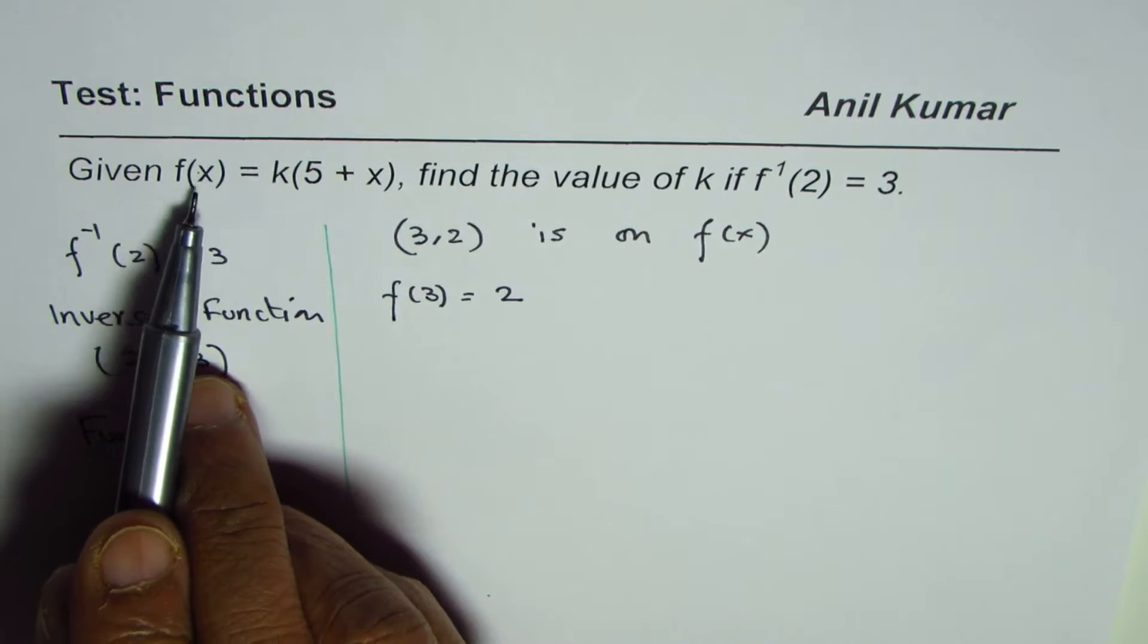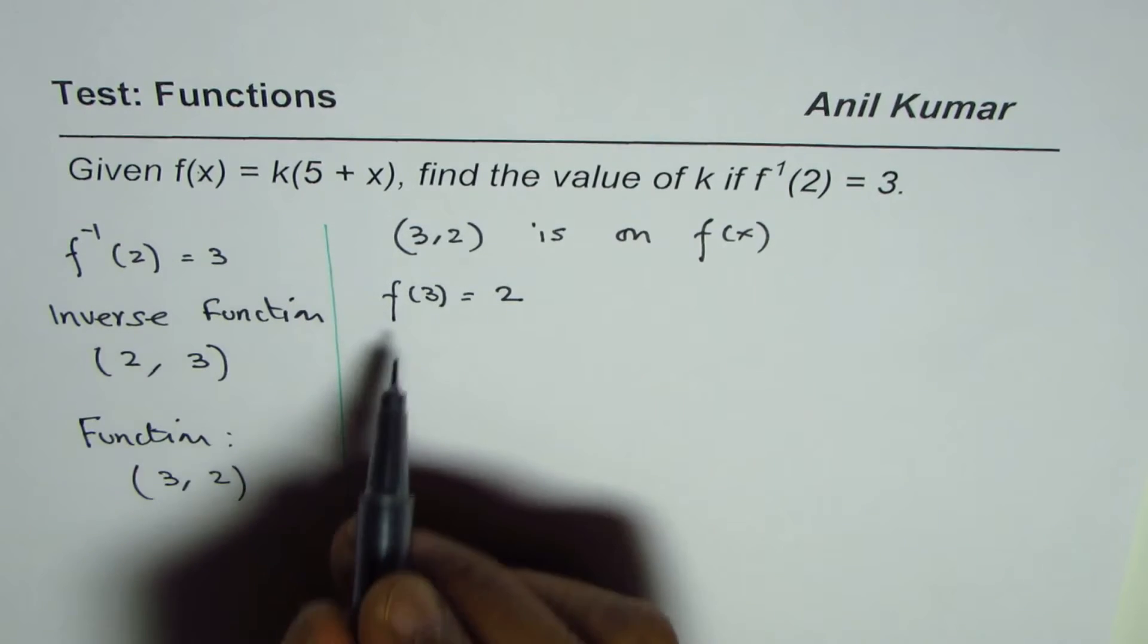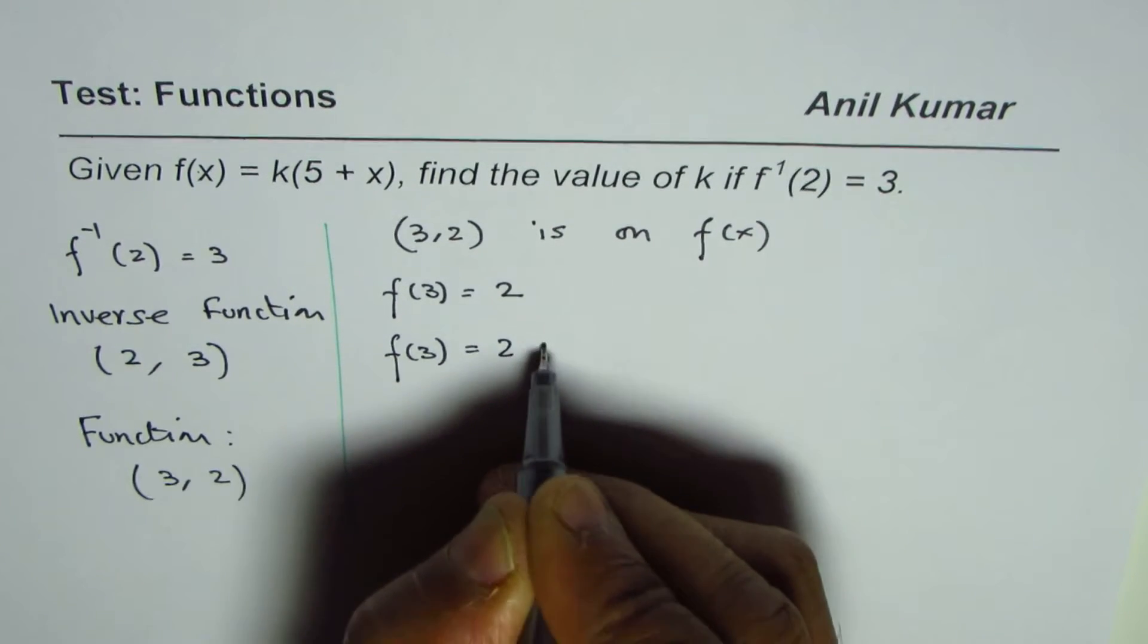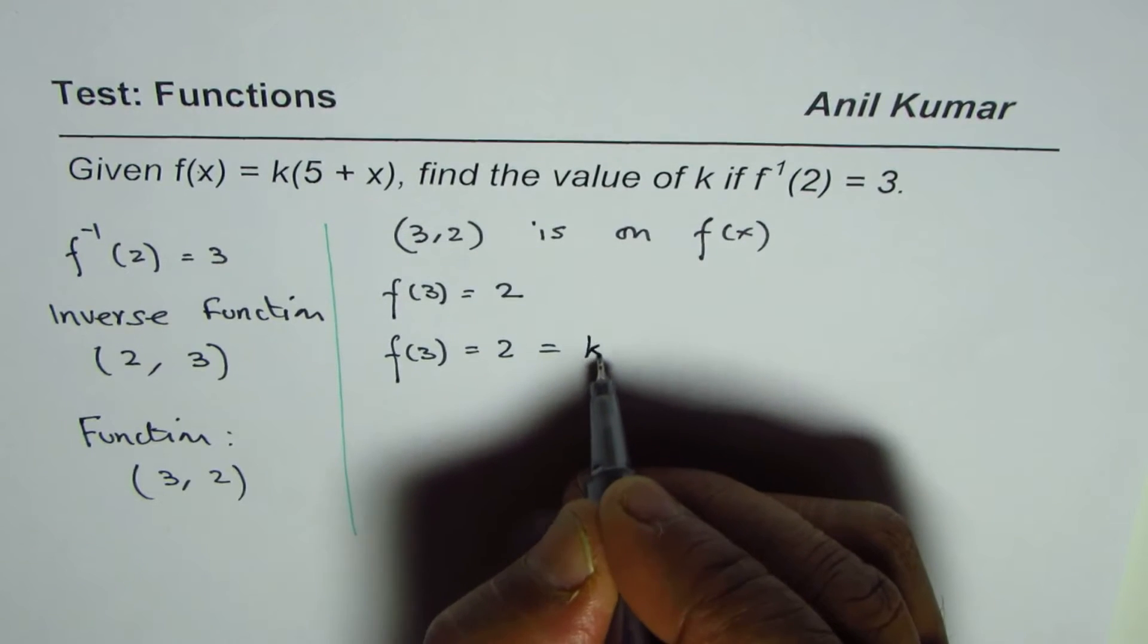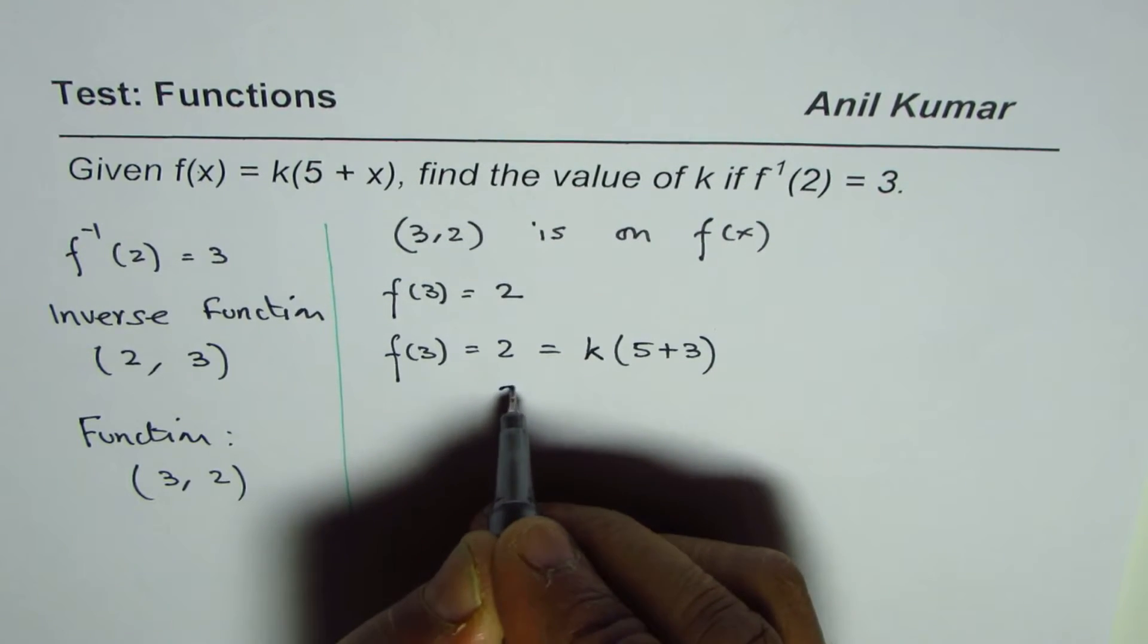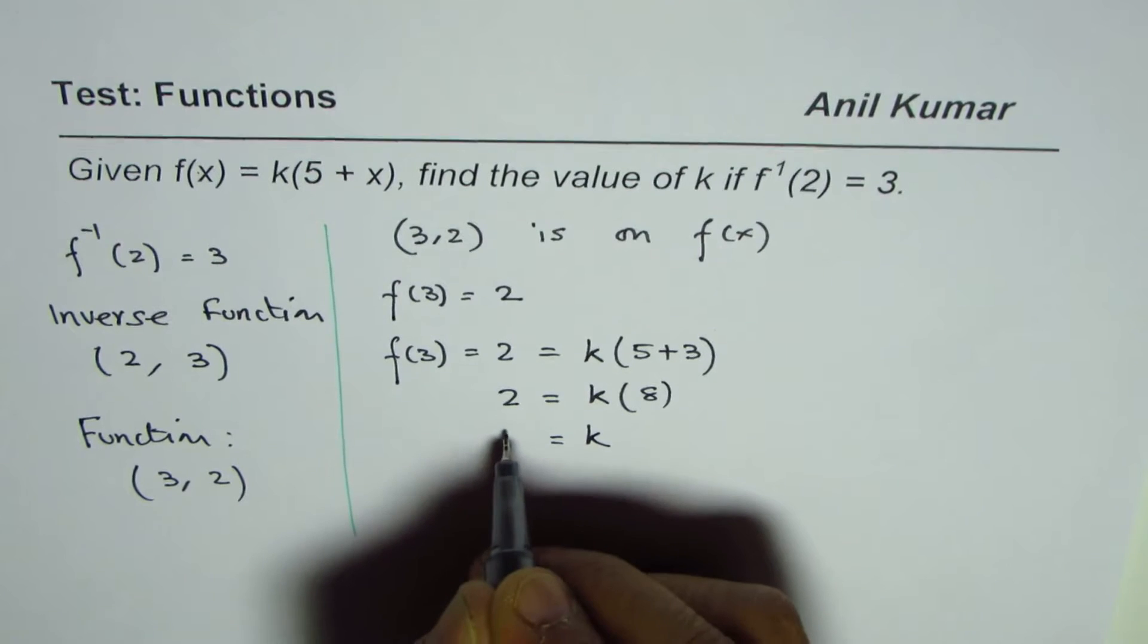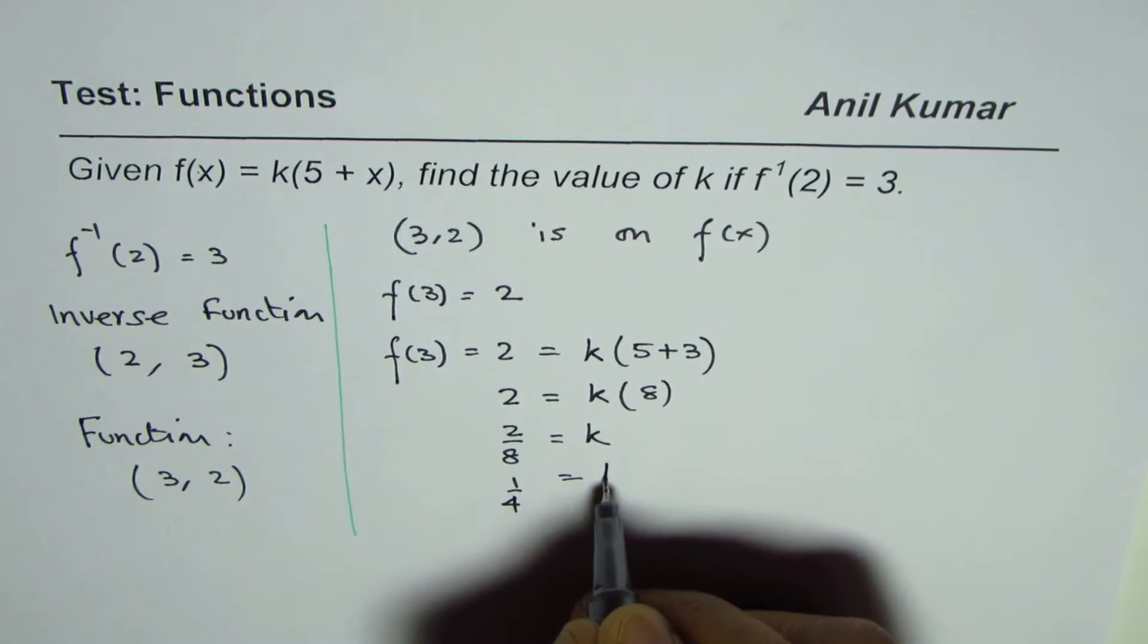What we are given here is f(x) is k times (5 + x). So what is f(3)? f(3), which equals 2, should be - let us replace x with 3 - so we get k times (5 + 3). That means 2 should equal k times 8. Now you can solve for k: k is 2 divided by 8, or 1 over 4.